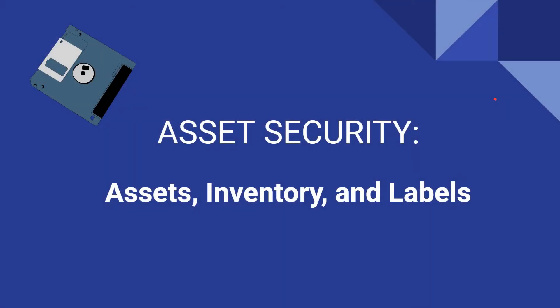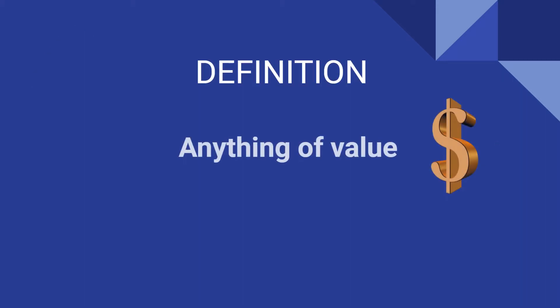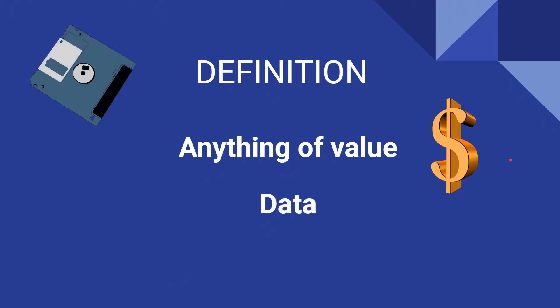Hello, and welcome to the first Domain 2 lesson where we'll cover assets, inventory, and labels. Let's get right into the definition of what an asset is. Assets can be anything of value to the company, but in the context of the CISSP framework, we're mostly talking about data and devices.